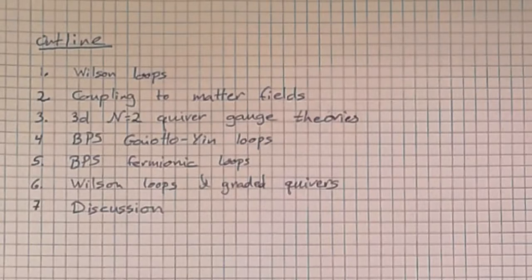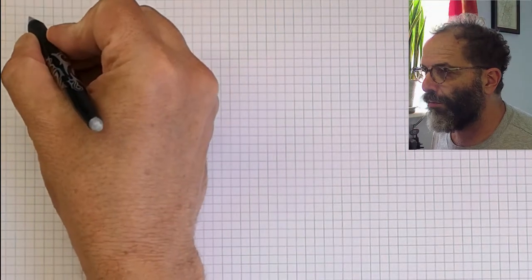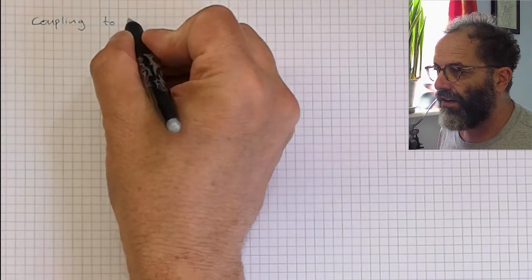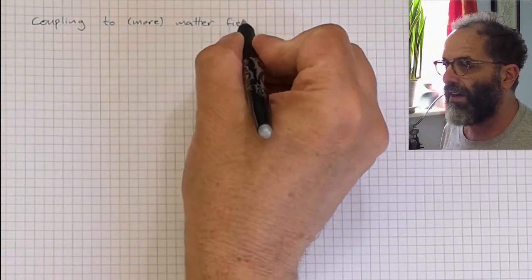For the definition of Wilson loops, press 1. For coupling to more matter fields, press 2. You can couple Wilson loops to more matter fields. So now consider two gauge groups, U(N1) and U(N2).